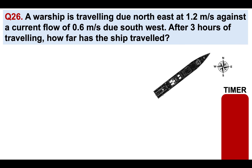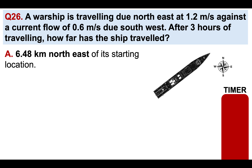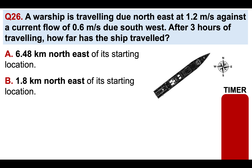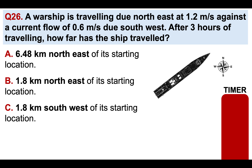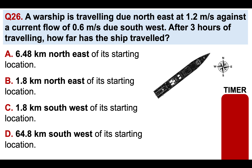Question 26: a warship is traveling due northeast at 1.2 meters per second against a current flow of 0.6 meters per second due southwest. After three hours of traveling, how far has the ship traveled? A: 6.48 kilometers northeast of its starting location; B: 1.8 kilometers northeast; C: 1.8 kilometers southwest; or D: 64.8 kilometers southwest. If you use a little bit of common sense, you will be able to remove two of the answer options straight away.